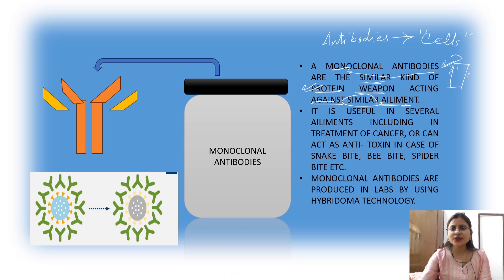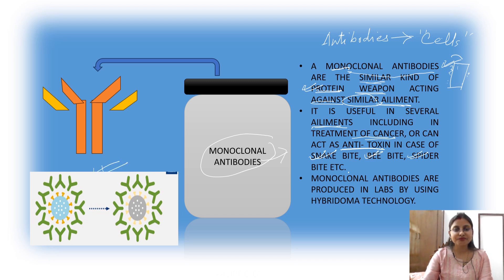Monoclonal antibodies are useful to treat several ailments like cancer. They can also act as anti-toxins in cases of snake bite, bee bite, spider bite, etc. In the diagrammatic representation here, you can see the antigen and the antibodies which look similar — these are the monoclonal antibodies.